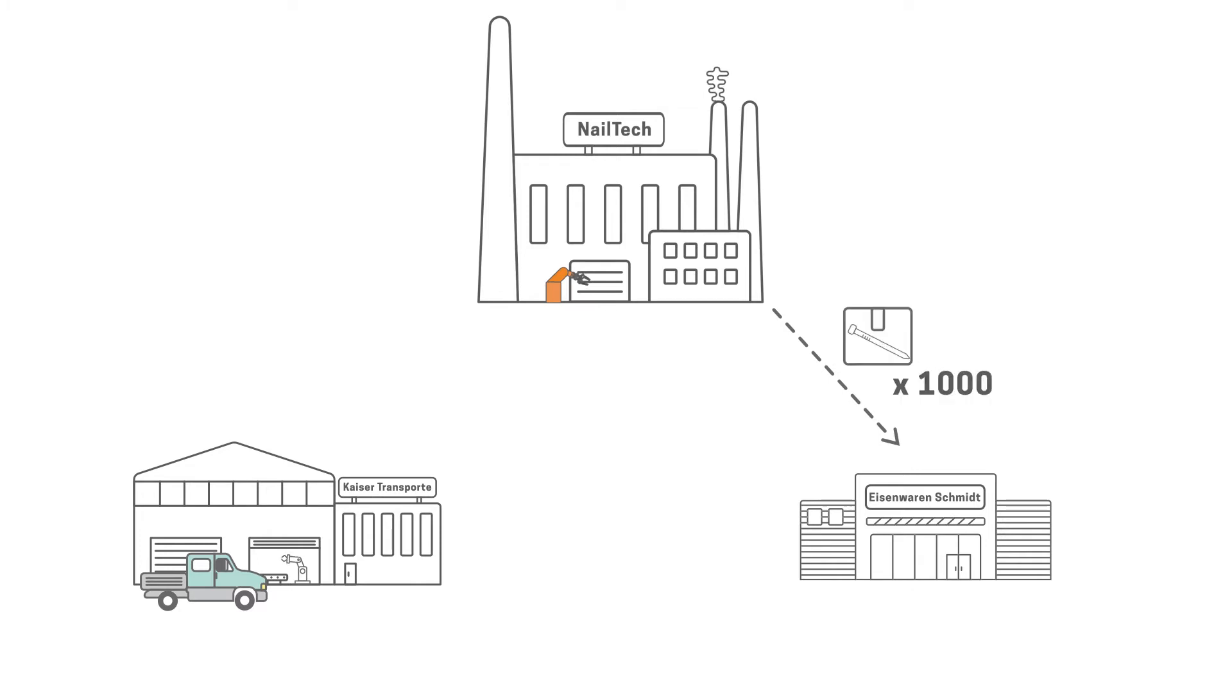Let's assume the company Eisenwaren Schmidt has purchased nails from Nailtec. Nailtec has to take over the delivery of the nails according to the purchase contract. For this, Nailtec and Kaisertransporter negotiate the transport and conclude a transport contract.